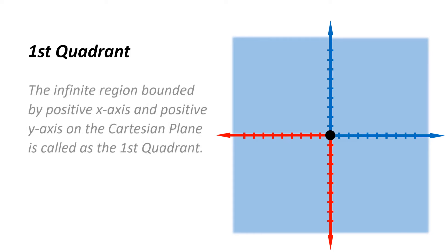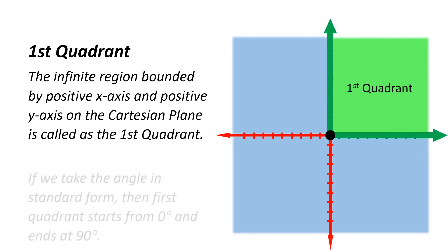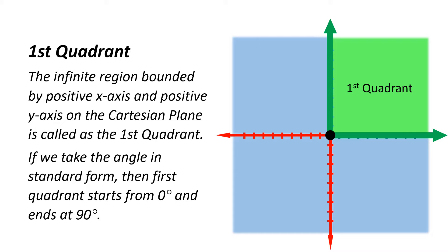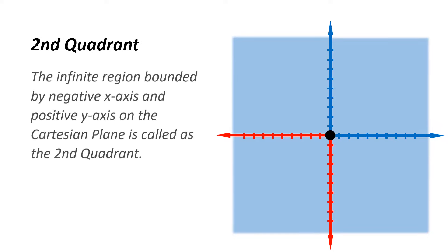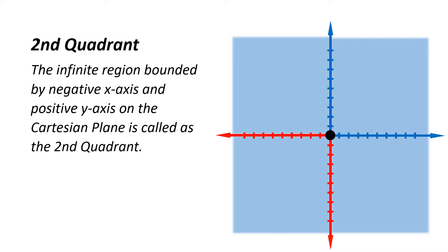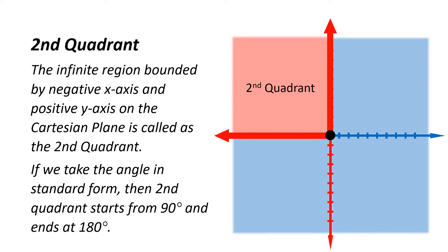The first quadrant is the infinite region bounded by the positive x-axis and positive y-axis on the Cartesian plane. In standard form, the first quadrant starts from zero degrees and ends at 90 degrees. The second quadrant is the infinite region bounded by the negative x-axis and positive y-axis, starting from 90 degrees and ending at 180 degrees.